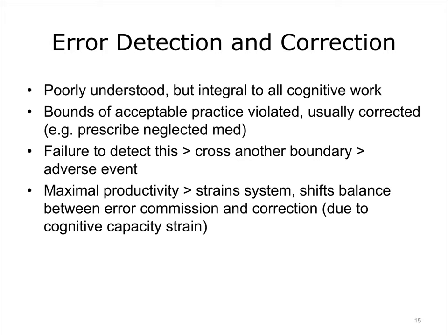Error detection and correction is poorly understood but essential to all cognitive work. Errors happen when the boundary of acceptable practice is violated — usually this is corrected. An example is a medication not being prescribed at the right time; this omission is detected and the medication is prescribed. If someone fails to detect the omission, this can lead to an adverse event, such as progression of a clinical condition to a dangerous point. At times of maximal productivity, the system may be strained, meaning there are not enough cognitive resources to detect and correct the error.